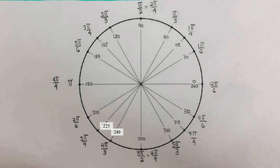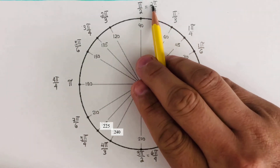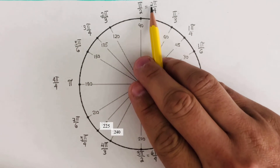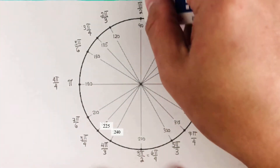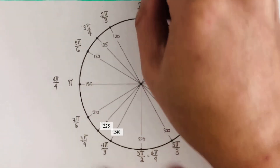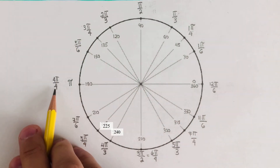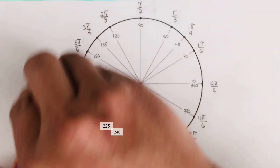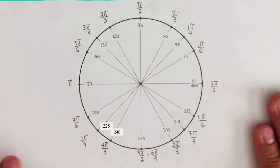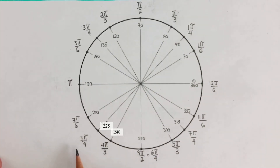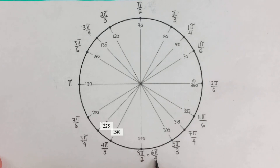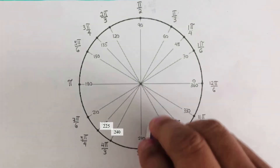Now we go back and reduce them to lowest term. 1π/4 is good. 2π/4 is divisible by 2, so that becomes π/2 — but we don't have to write that because it's already covered when we did the interval of 30. 3π/4 is good; we don't have to reduce it. 4π/4 is actually π, so we don't have to write that either — it's already covered under the interval of 30. 5π/4 cannot be reduced, so we keep it. 6π/4 reduces to 3π/2 — divisible by 2 — so we don't have to write that.